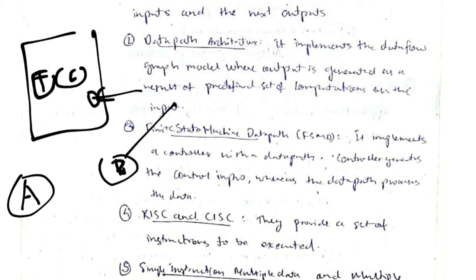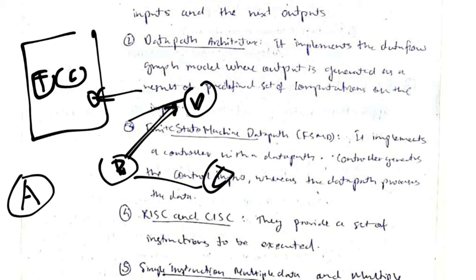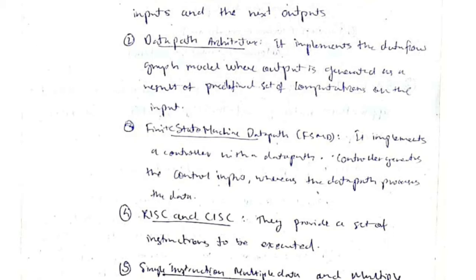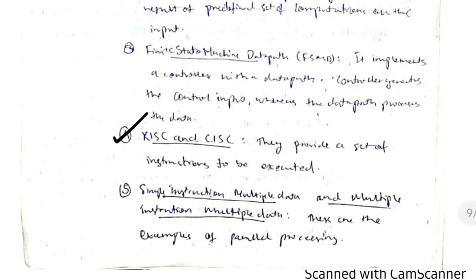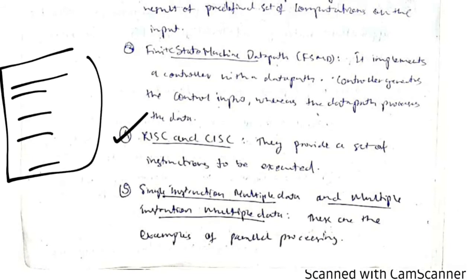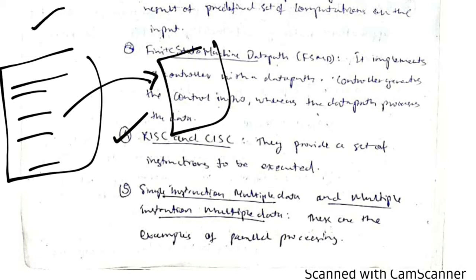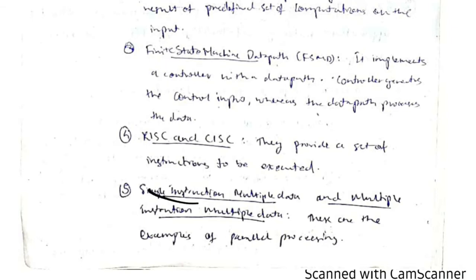In the vending machine FSM, once the coin is inserted, the user selects tea or coffee, moving to state C or D respectively. After the machine delivers the beverage, it returns to the initial state of waiting for a coin. The fourth architecture type is RISC and CISC — sets of instructions used to code the task to be performed into the computer.